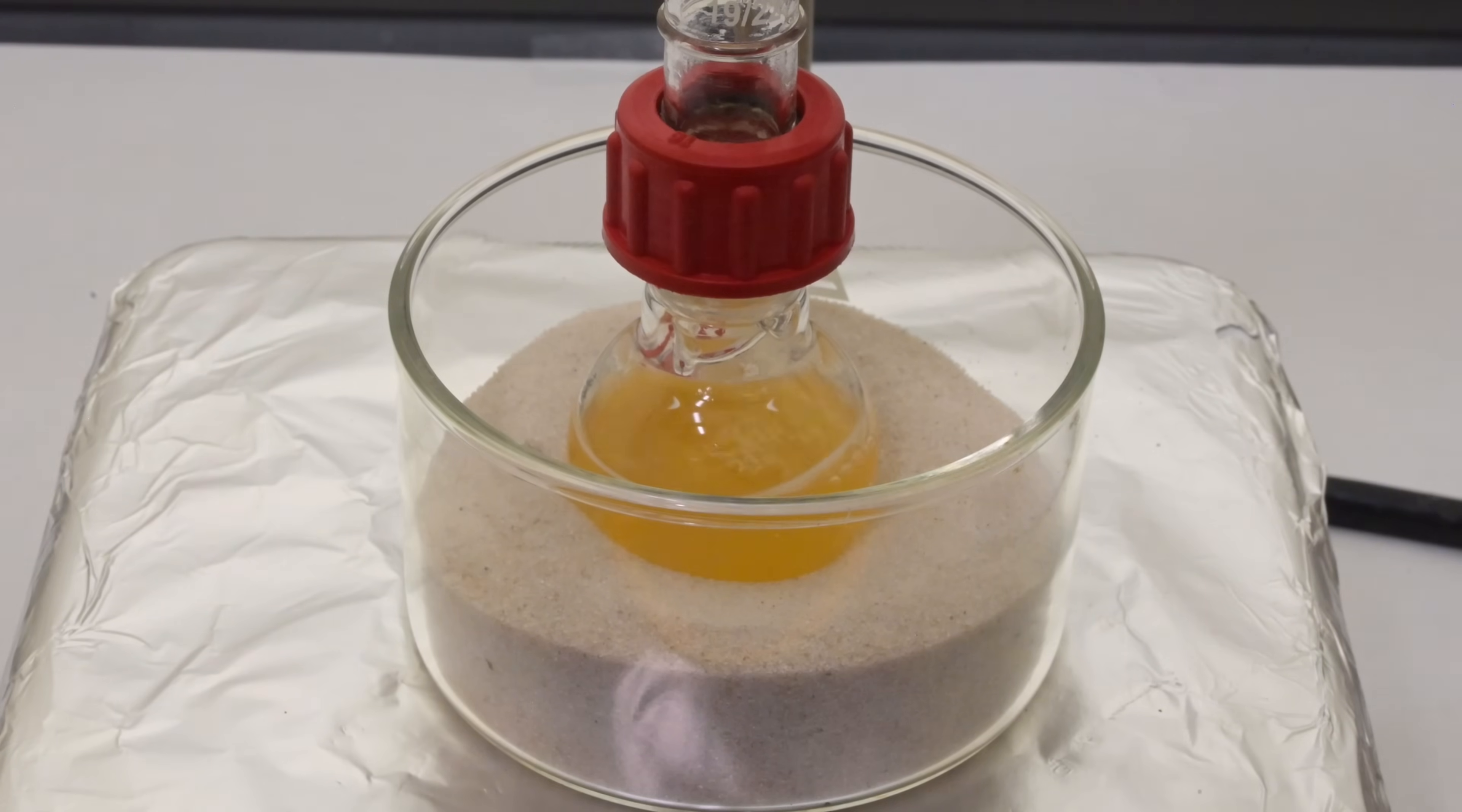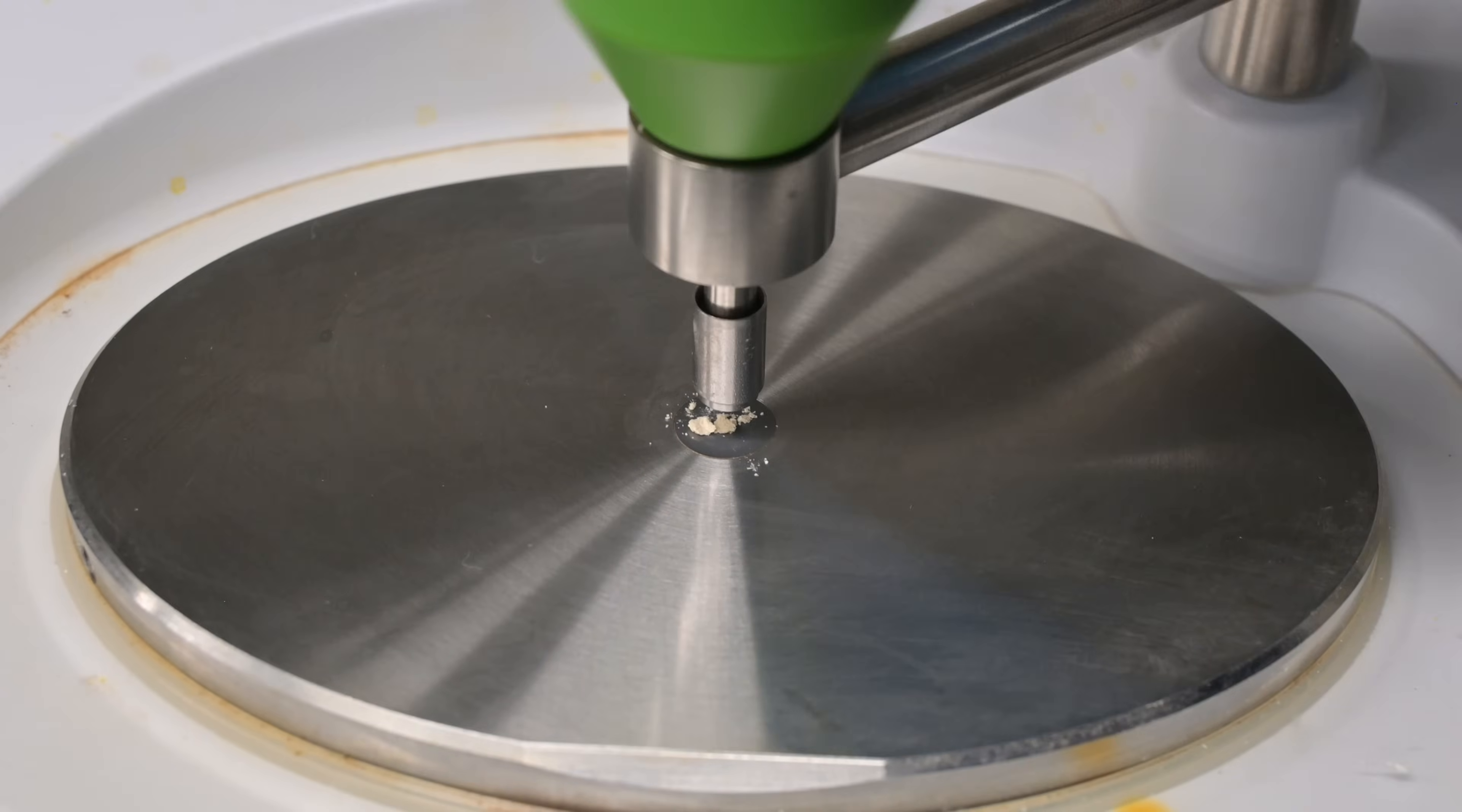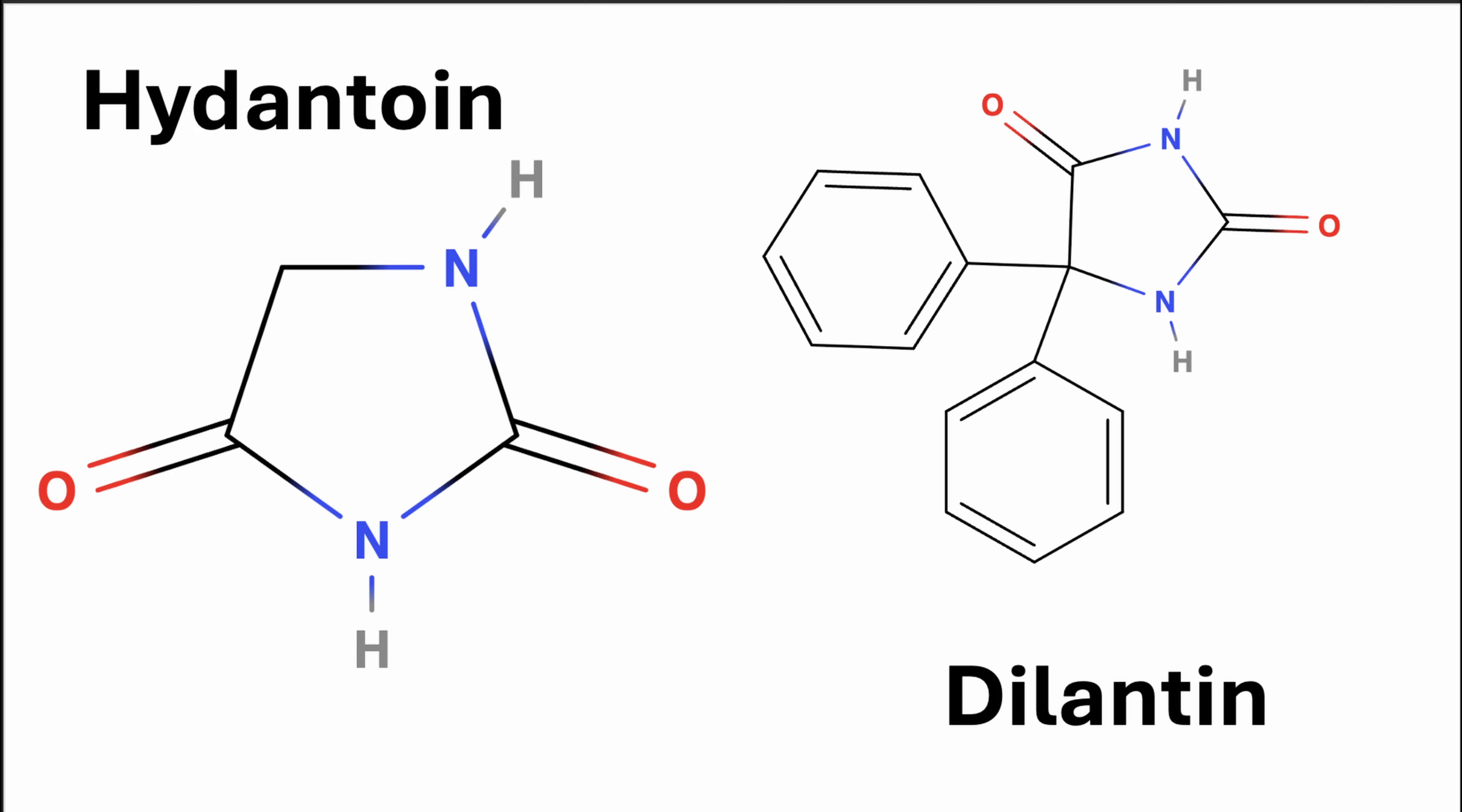Finally, during the synthesis of Dilantin, 5,5-diphenyl hydantoin, the FTIR analysis serves as an indispensable confirmation tool for successful synthesis of hydantoin ring formation. Dilantin being a hydantoin derivative, features characteristic peaks that line up to its cyclic amide structure. Notably, Dilantin exhibits a prominent absorption band characteristic of amide functional groups, specifically amide 1 and amide 2 bands.